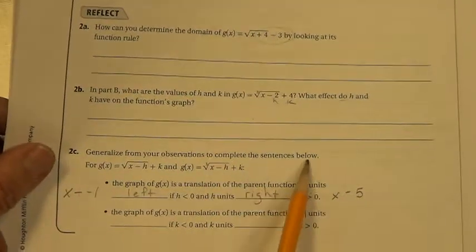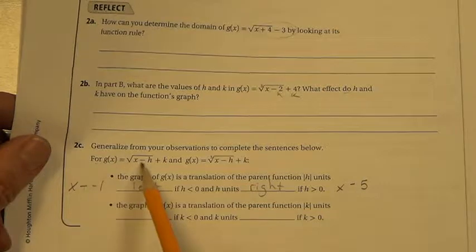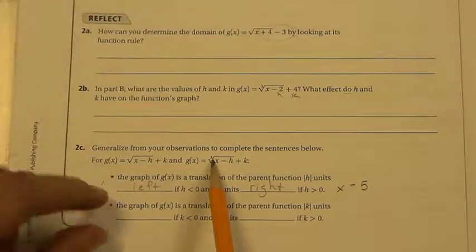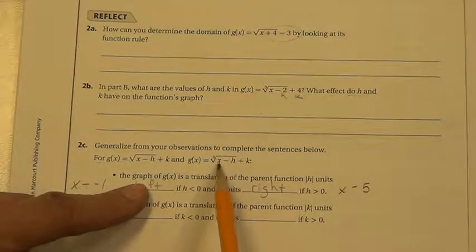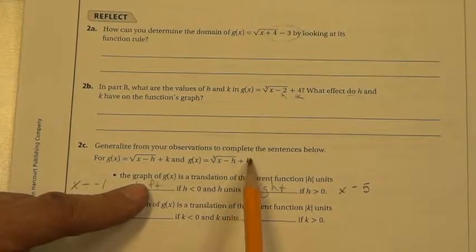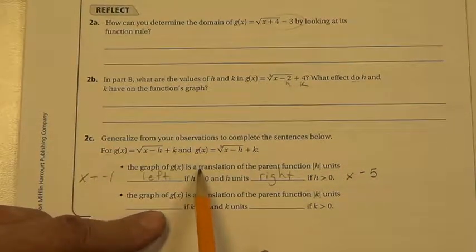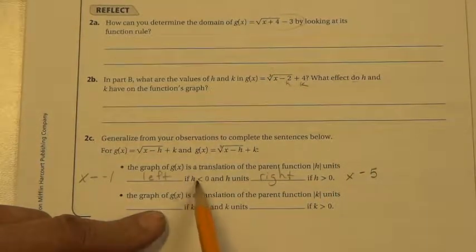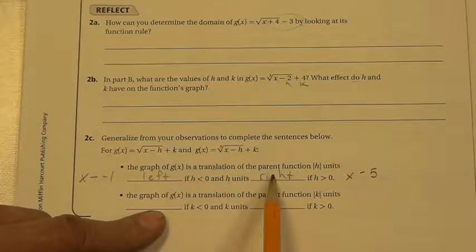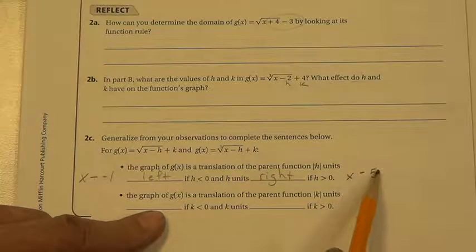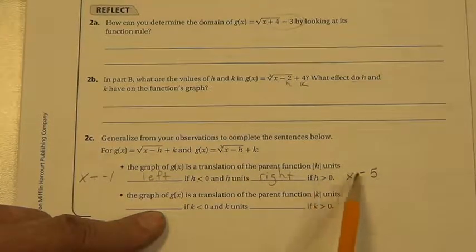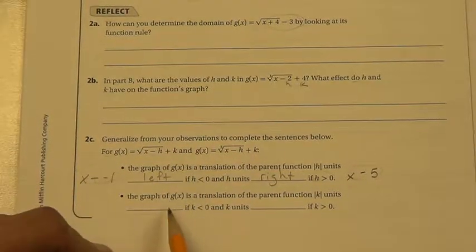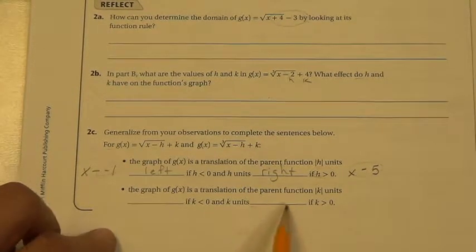Generalize from your observations to complete the sentences below. For g of x, square root x minus h plus k, and for g of x, cube root x minus h plus k. The graph of g of x is a translation of the parent graph h units left if h is less than 0, h units right if h is greater than 0. And we showed how it looks. When it's a positive h value, it looks negative. When it's a negative h value, we put the two negatives together and we get a positive so it looks different.